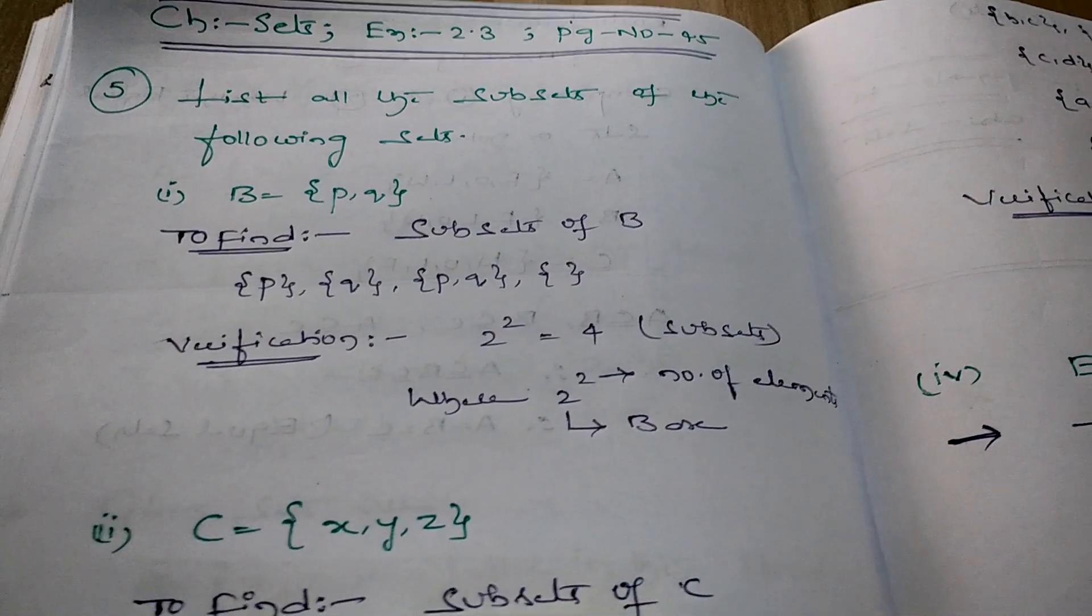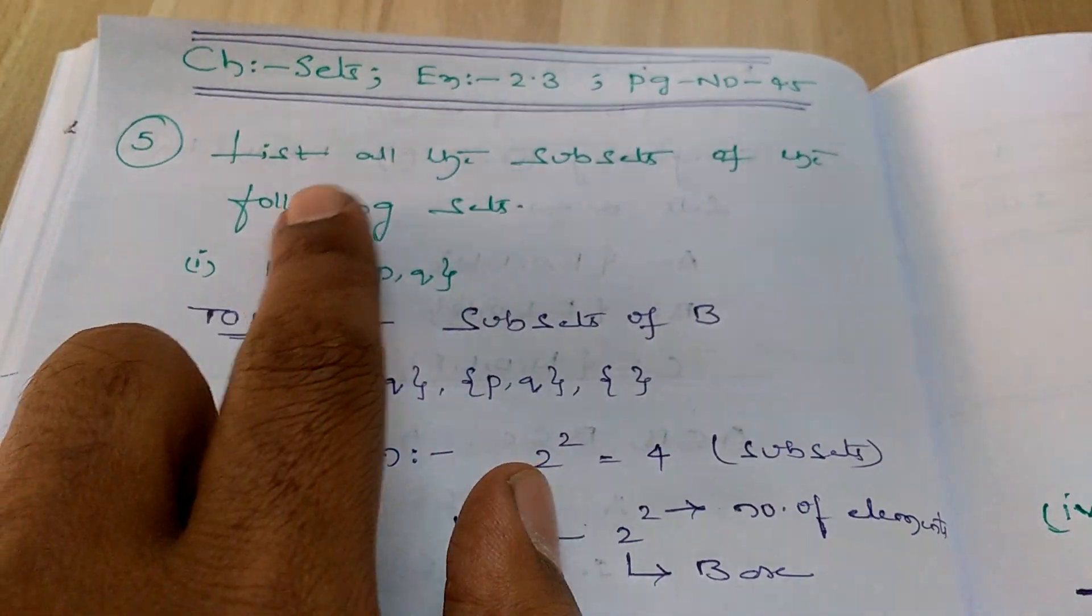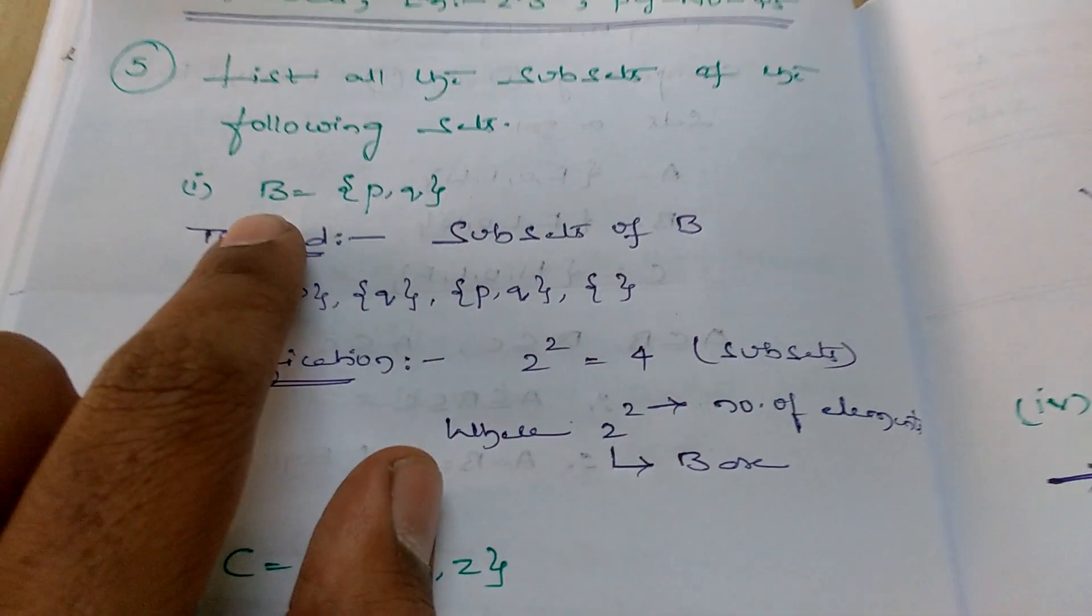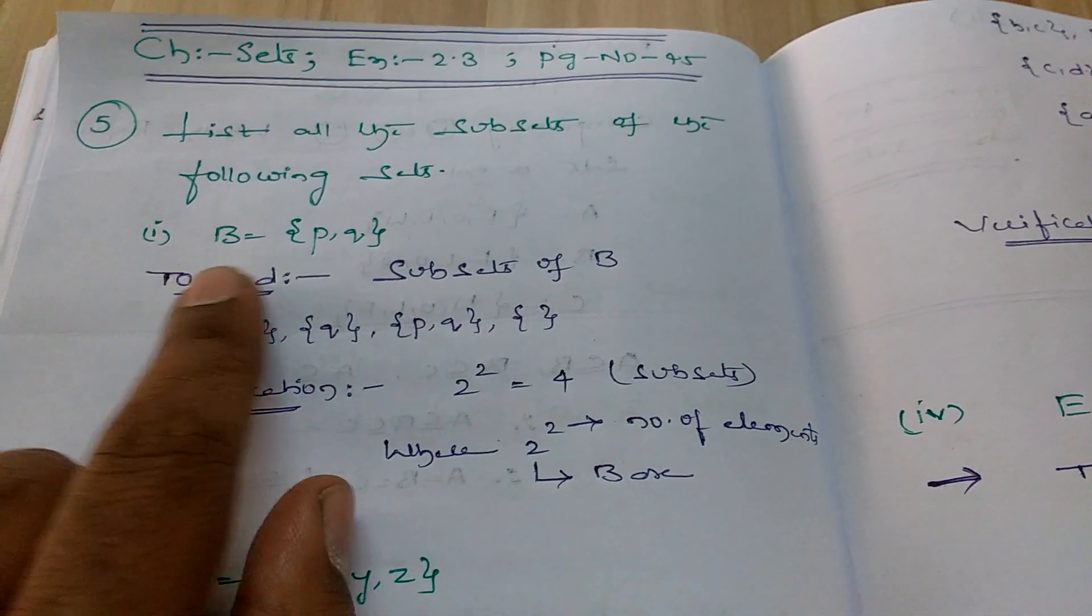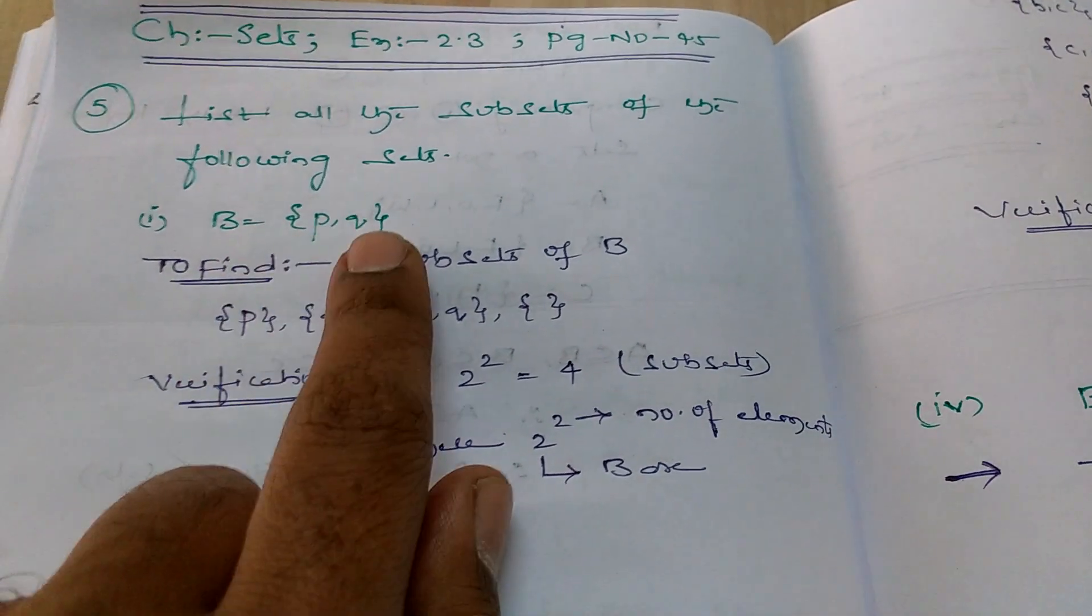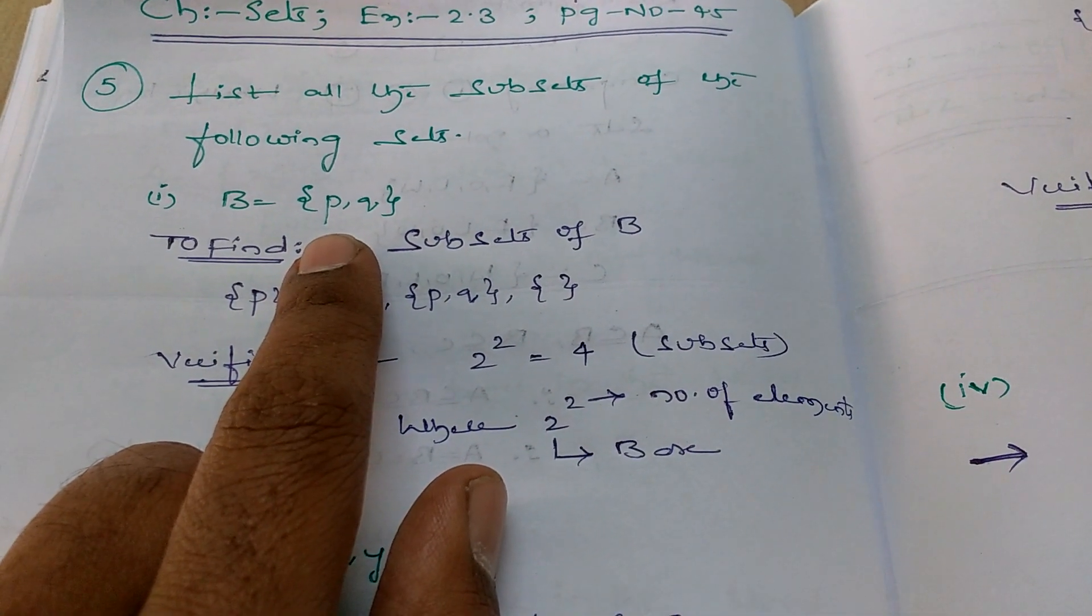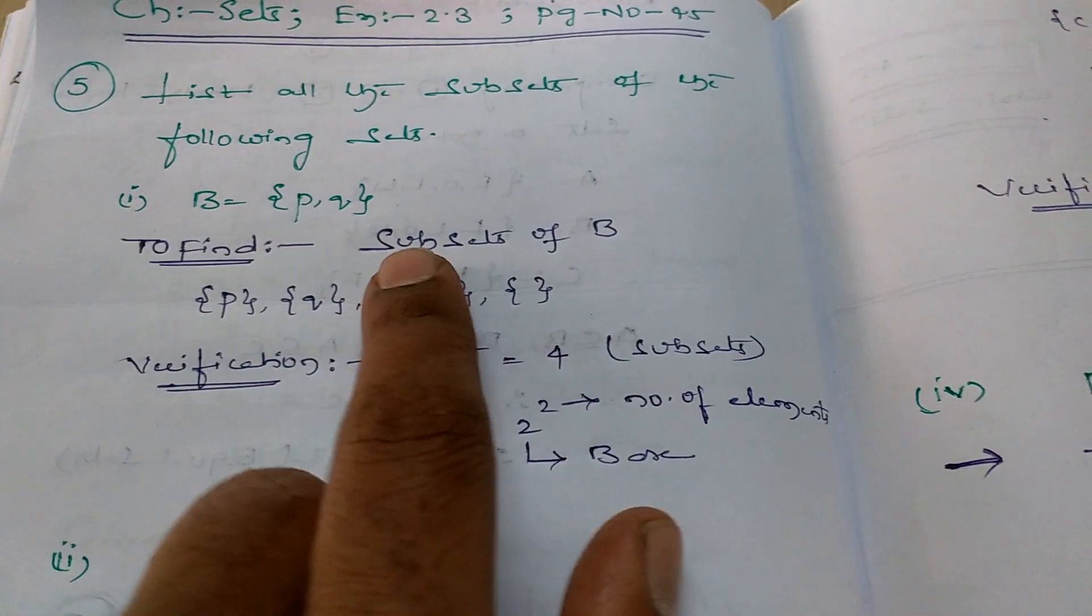Let's see what is given. List all the subsets of the following sets. We have to find the subsets for the given set. What is given first? Set B equals {p, q}. We have to find the number of subsets for the given set B.